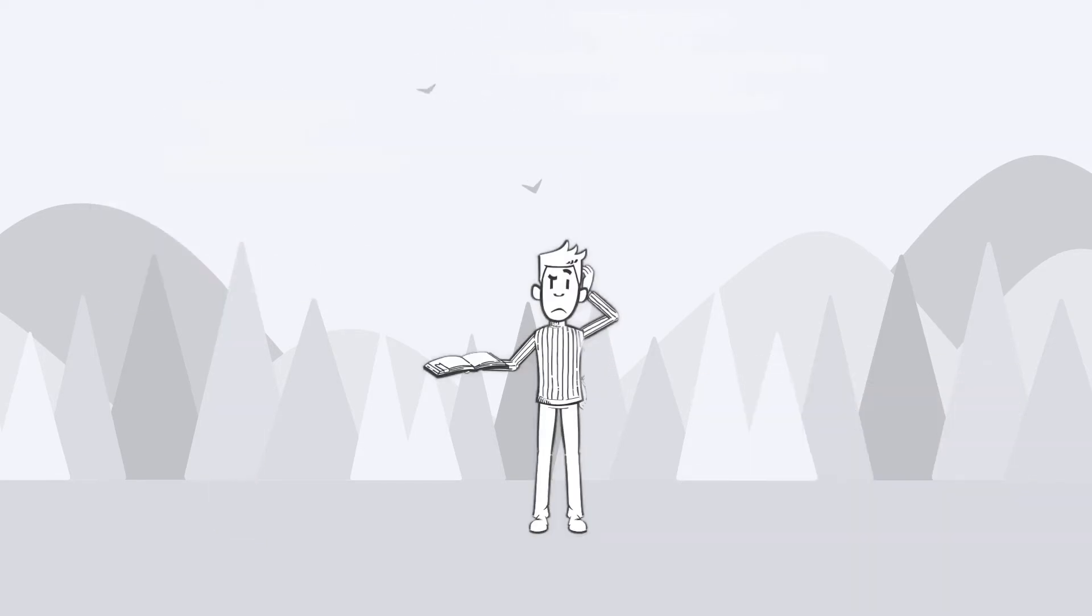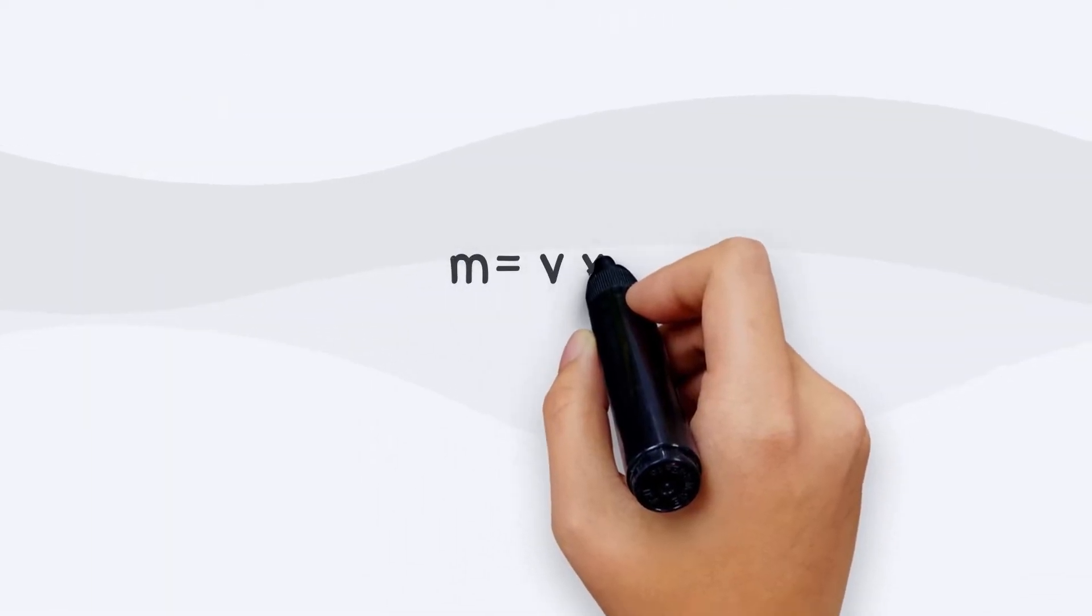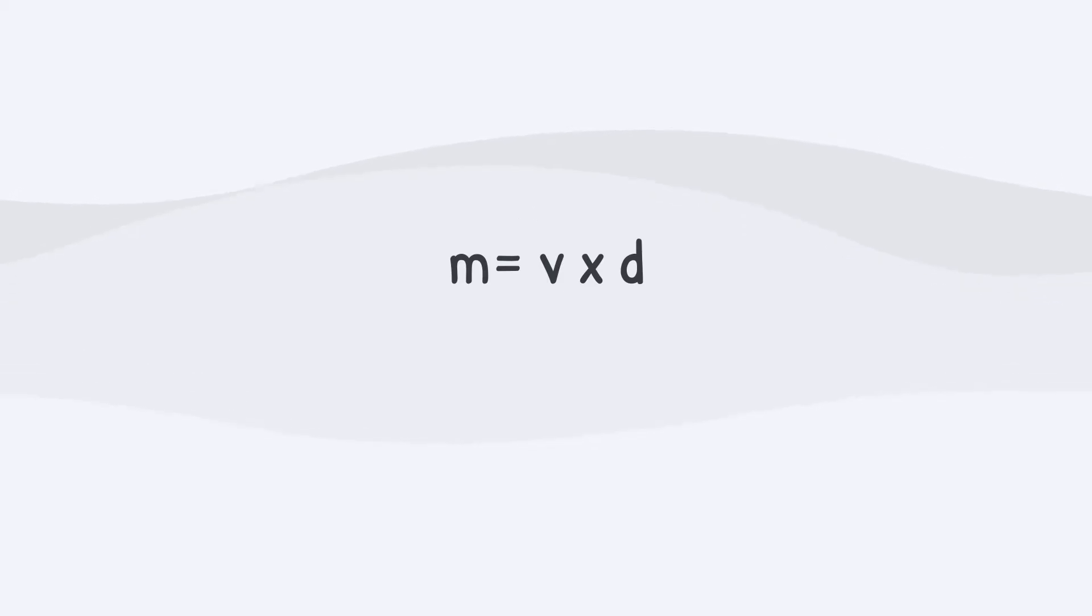But before we start, let us remind you of these two formulas you studied before. Mass equals volume times density, and volume equals base area times thickness.